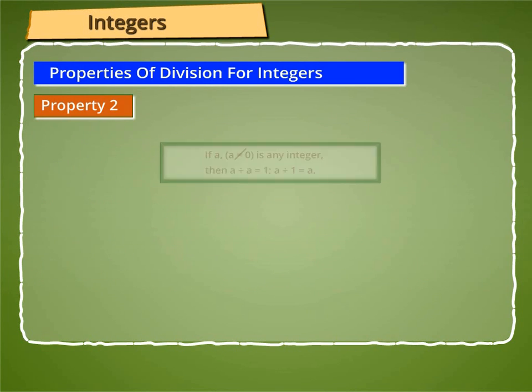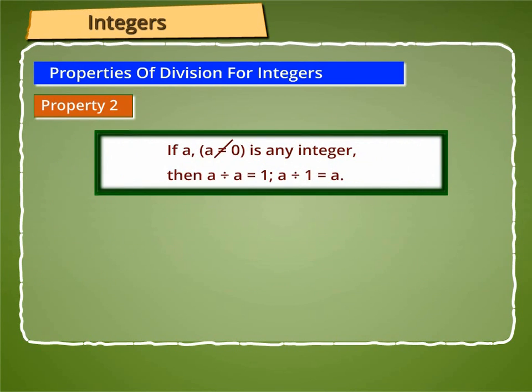Property 2: If a, a is not equal to 0, is any integer, then a divided by a is equal to 1, a divided by 1 is equal to a. For example, 5 divided by 5 is equal to 1, and minus 7 divided by 1 is equal to minus 7.